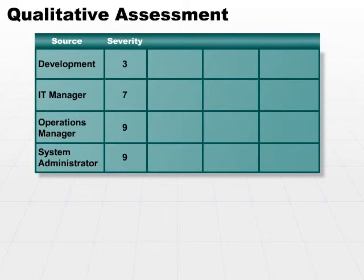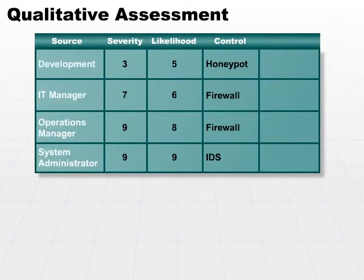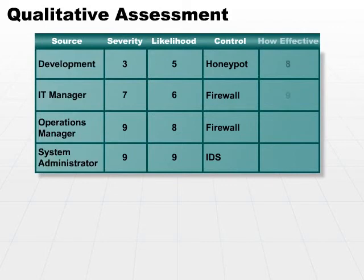Ask each organization: what's the likelihood that a specific threat could occur? How would you control it? In a real qualitative risk assessment spreadsheet, you would probably create more than just one particular control. Ask the development managers how many different ways could we control this threat, and how effective is each method.